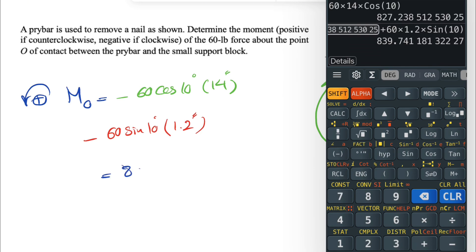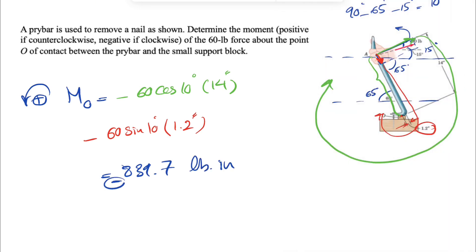And this is going to give us 839.7 pounds inch. And we have a negative sign in here because we have both of them negative and the negative sign shows that the moment is clockwise. Yeah, that would be the final answer for this question.